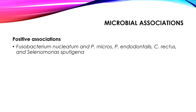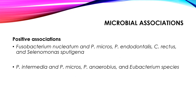Different kinds of microbial associations are found. To name two: a positive association is found between Fusobacterium nucleatum and P. micros, P. endodontalis, C. rectus, and Selenomonas sputigena. Another positive association is found between P. intermedia and P. micros, P. anaerobius, and Eubacterium species.